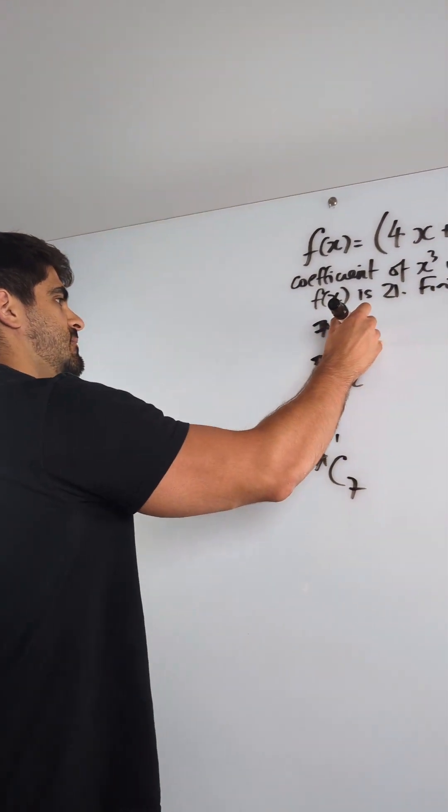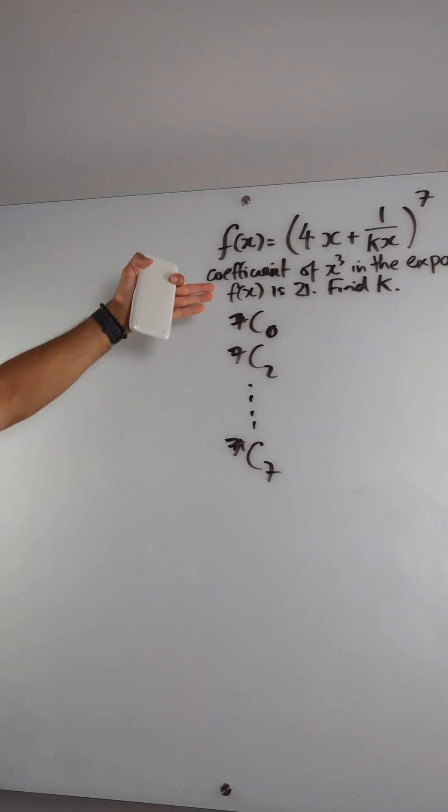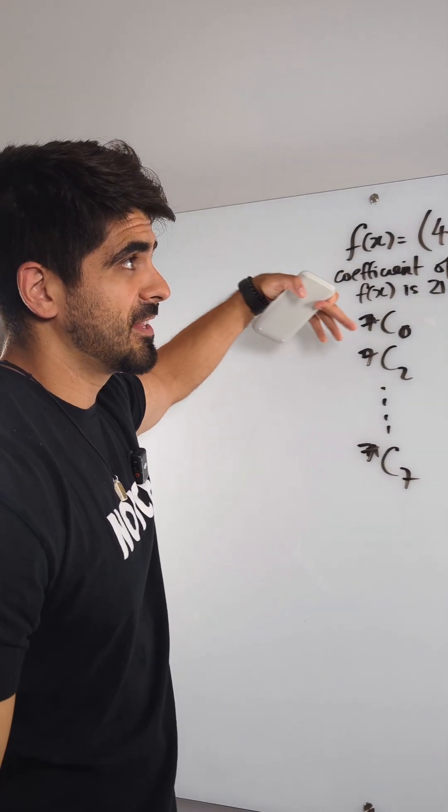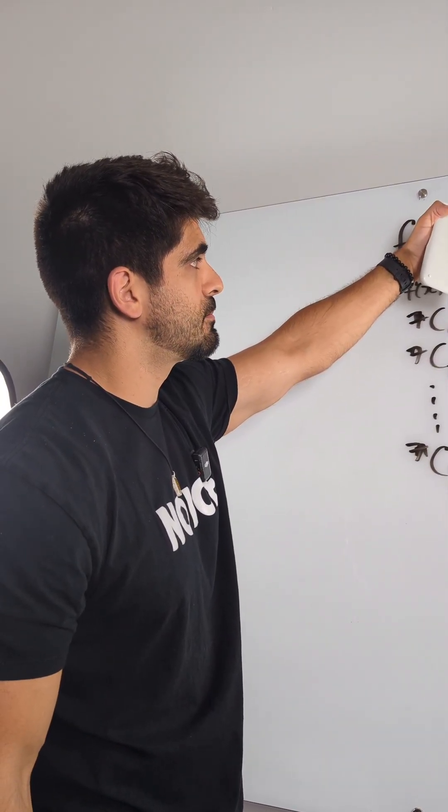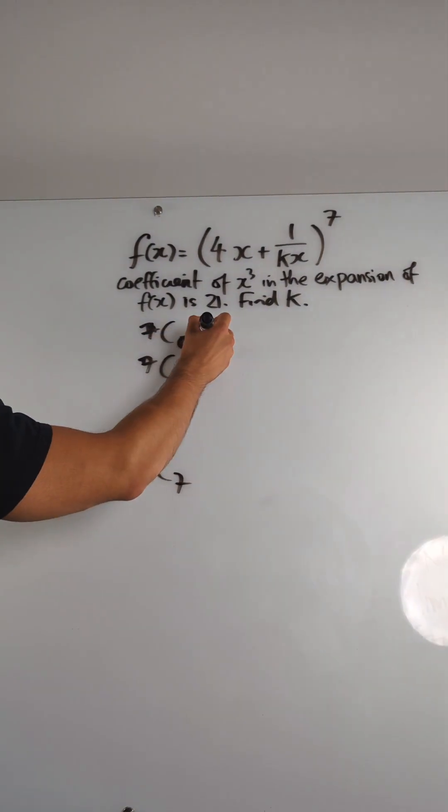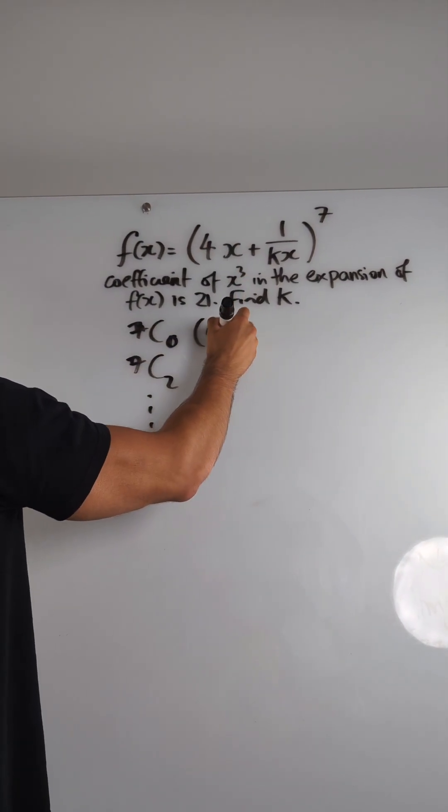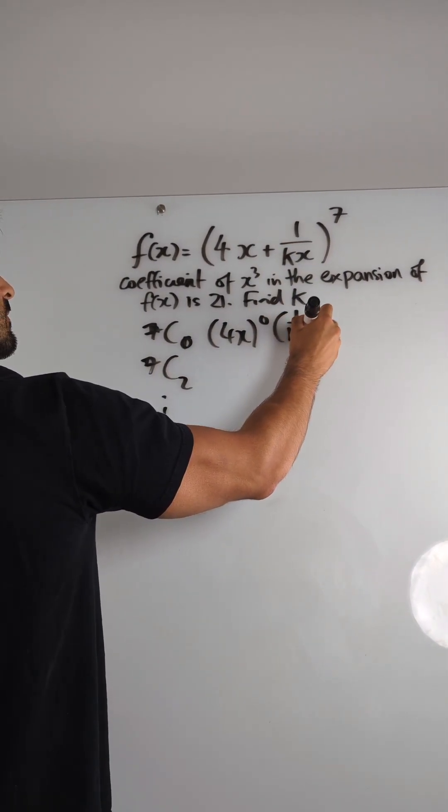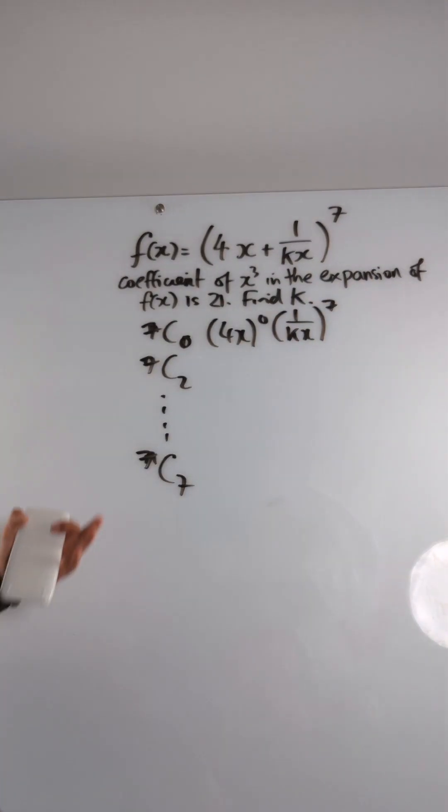What you want to do, in fact it starts with 0, you want to kind of get an idea or find the pattern, and then you just choose the appropriate one that will leave you with x cubed. So 7 choose 0, so it would be 4x to the power of 0, then you would have the second term to the power of 7. Now don't simplify that.